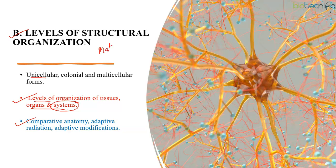Usually the questions asked are of the 'match the following' type. They can give you a group and its morphological features — for example, groups like mosses and liverworts — along with features like unicellular rhizoids, multicellular rhizoids, stomata, sporophyte, or dominant gametophyte, and you have to find out the correct match.